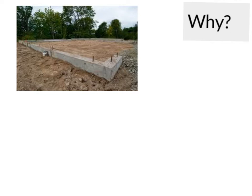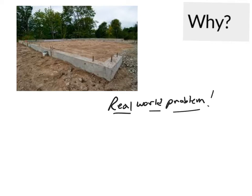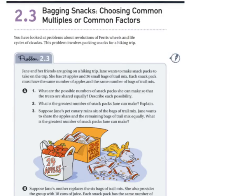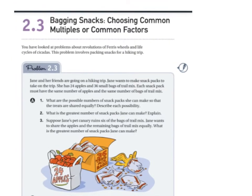This problem could actually be a real-world problem you might face — maybe if you're having a sleepover or trying to divvy up some real items. The problem is called Bagging Snacks: Choosing Common Multiples or Common Factors. You have to determine whether to use common multiples or common factors, just like in the Ferris wheel and cicada problems.